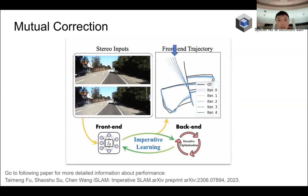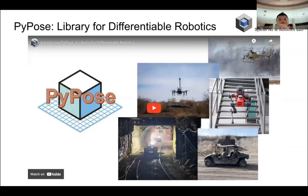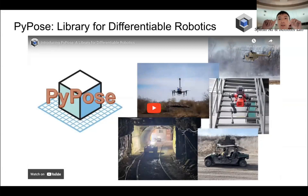You may also ask: how can we implement such a complicated SLAM system, since all of them are going to be different and they should work with deep learning-based methods? Actually, our answer is the PyPose Python library. So next I will play a short video to introduce the PyPose library.